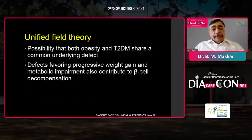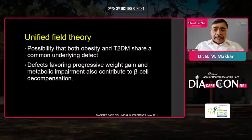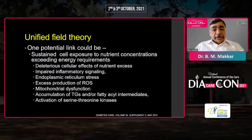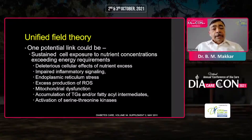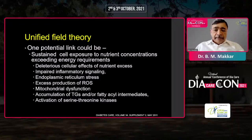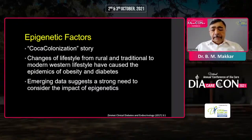There is a strong possibility that both obesity and type 2 diabetes share a common underlying defect, and these defects favor not only weight gain and insulin resistance but also contribute to beta cell dysfunction. Possibly the ongoing exposure to excessive nutrient concentration at cellular level — more than the energy requirements of the cells — leads to deleterious effects, including increased stress in the endoplasmic reticulum, increased production of free radicals, mitochondrial dysfunction, and a cascade of reactions leading to insulin resistance and diabetes.